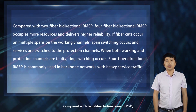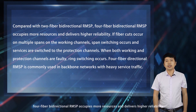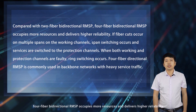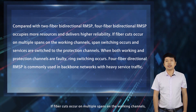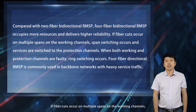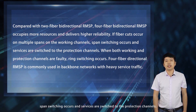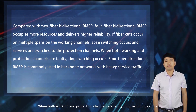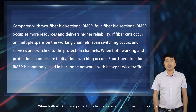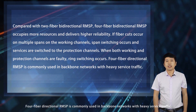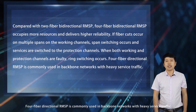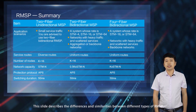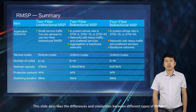Compared with two-fiber bidirectional RMSP, four-fiber bidirectional RMSP occupies more resources but delivers higher reliability. If fiber cuts occur on multiple spans on the working channels, span switching occurs. When both working and protection channels are faulty, ring switching occurs. Four-fiber bidirectional RMSP is commonly used in backbone networks with heavy service traffic. This slide also describes the differences and similarities between different types of RMSP.